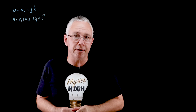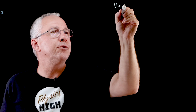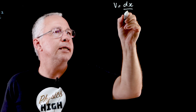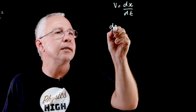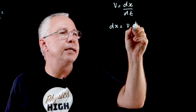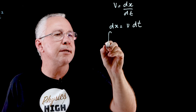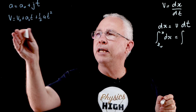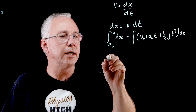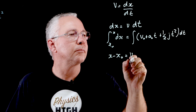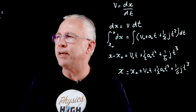Now, our third equation of motion. We start by saying v equals dx/dt. Rearranging, dx equals v dt. We integrate both sides, remembering that our v is now v₀ plus a₀t plus one-half jt squared. And we get our third equation: x equals x₀ plus v₀t plus one-half a₀t squared plus one-sixth jt cubed.